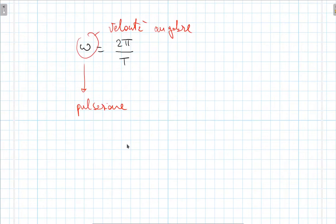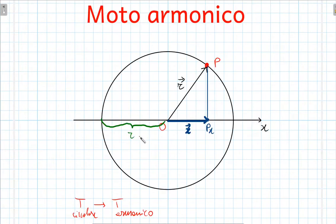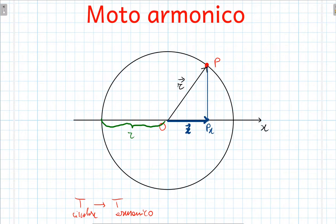Le relazioni della pulsazione con le altre grandezze sono le stesse tratte dal moto circolare. In particolare, visto che 1/T è la frequenza, avete 2π per la frequenza, e questa relazione vale anche per il moto armonico. Nel caso del moto circolare abbiamo diversi esempi pratici: le lancette dell'orologio, il moto della Luna attorno alla Terra o della Terra attorno al Sole. Ma anche per il moto armonico abbiamo bisogno di esempi pratici.